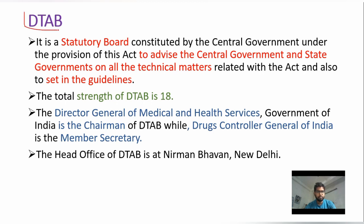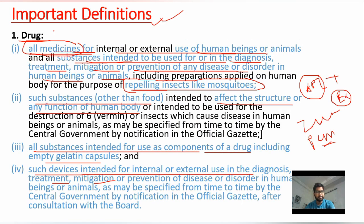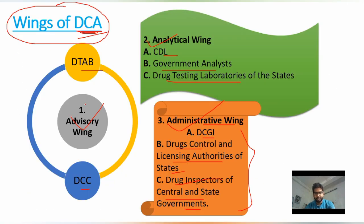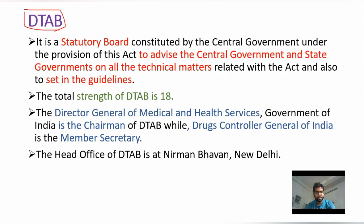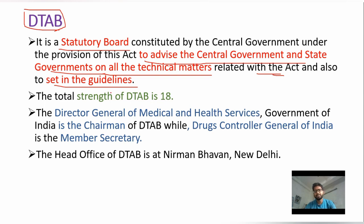The most important portion of the Act is DTAB — the Drug Technical Advisory Board. DTAB is the Advisory Wing of this Act. It is a statutory body that advises the central government and state governments on all technical matters related to this Act and also sets different guidelines. The total strength of DTAB is 18.